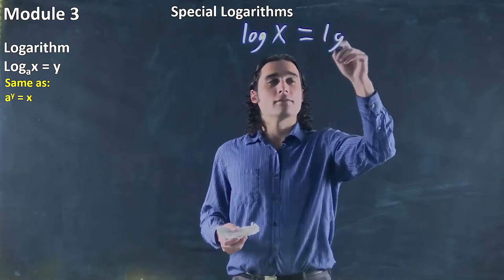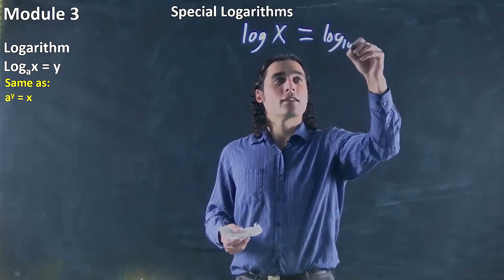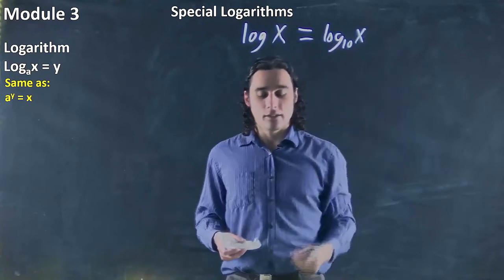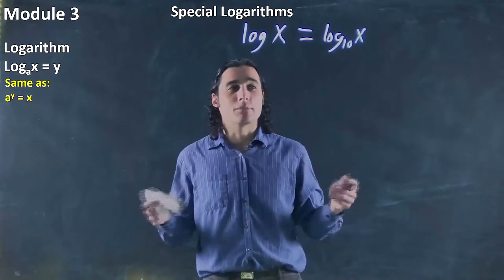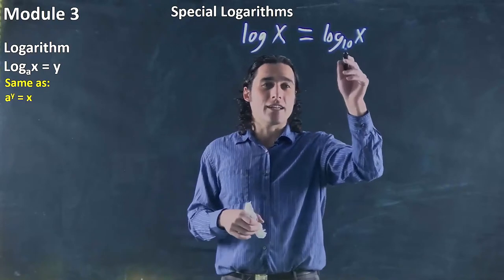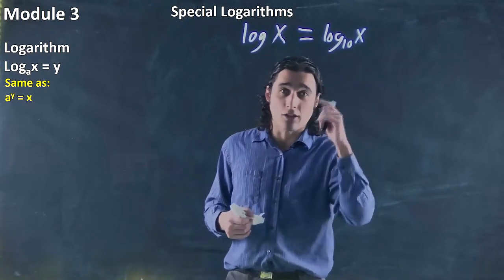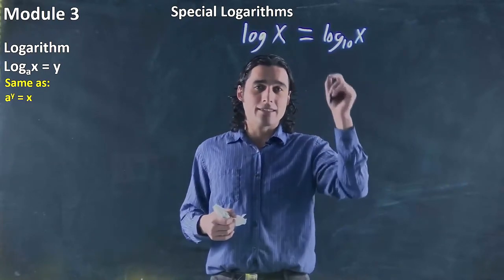It's implied that that's base 10. That's just a common thing in math. That it's known if the base isn't written, it's base 10. Or someone screwed up and didn't write the base. But more than likely, if the base is not there, or if you're using your calculator and using log, that's log to the base 10.